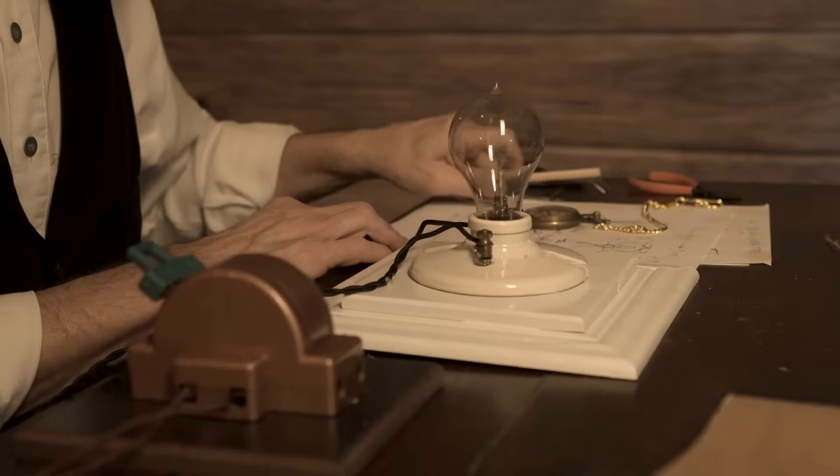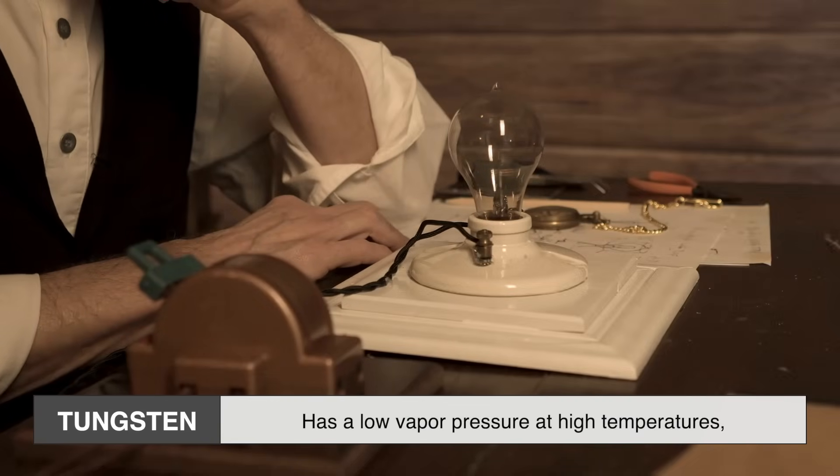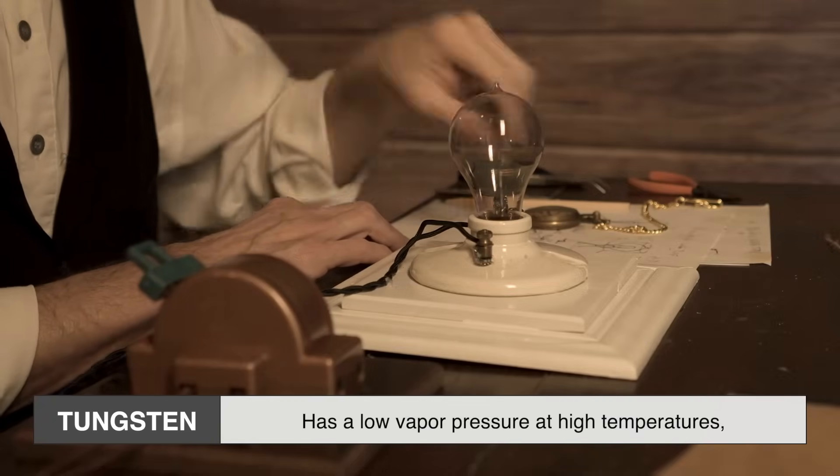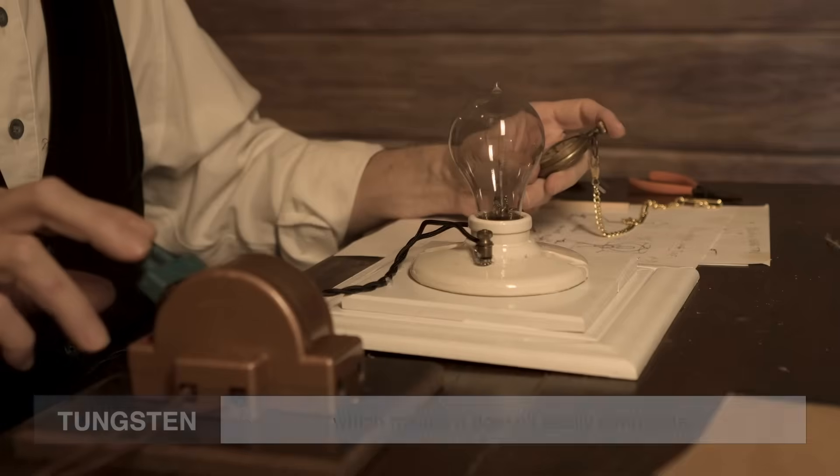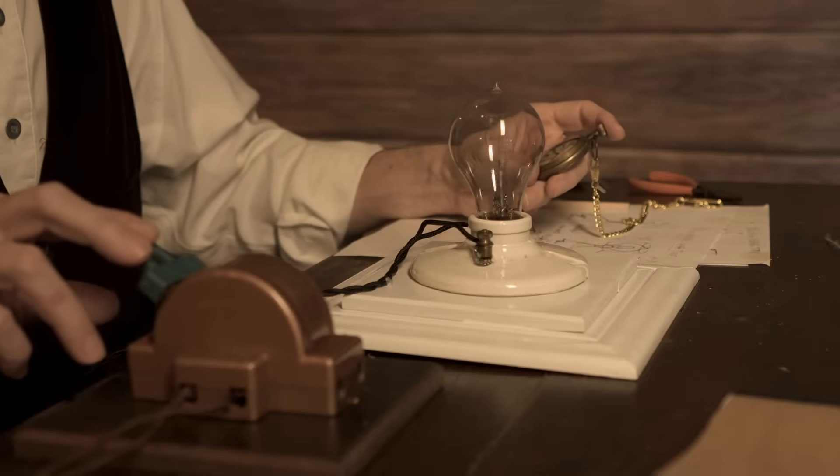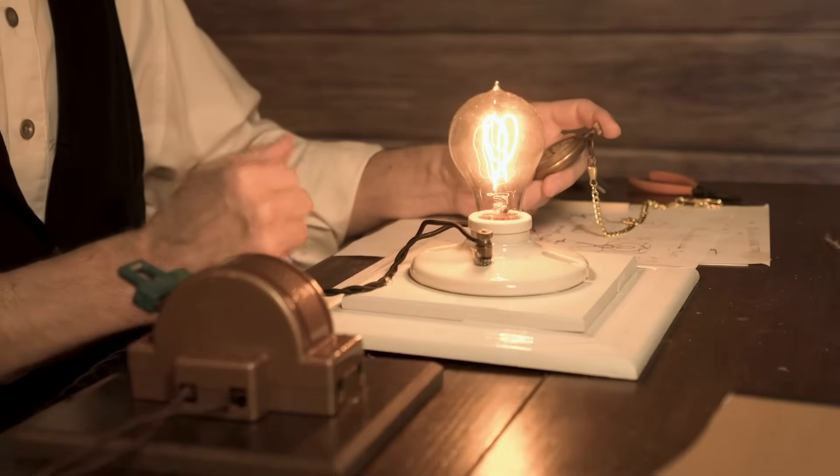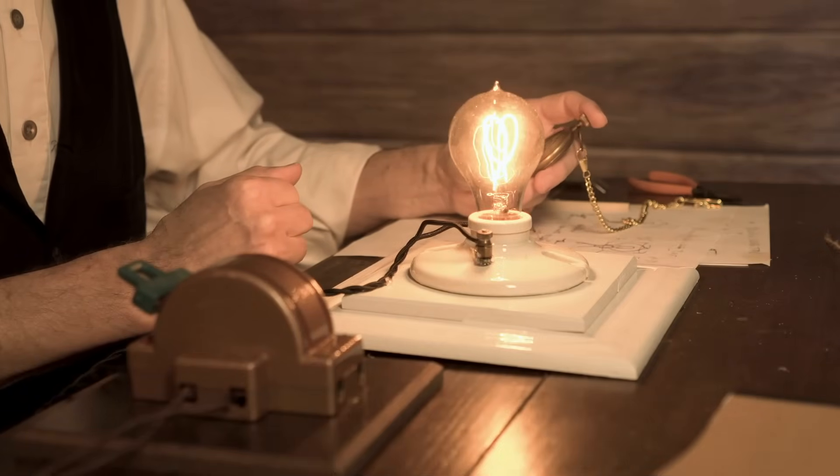But it's not just about the melting point. Tungsten also has a low vapor pressure at high temperatures, which means it doesn't easily evaporate. If it did, you'd have bits of metal condensing on the inside of your bulb every time you turned on the light.